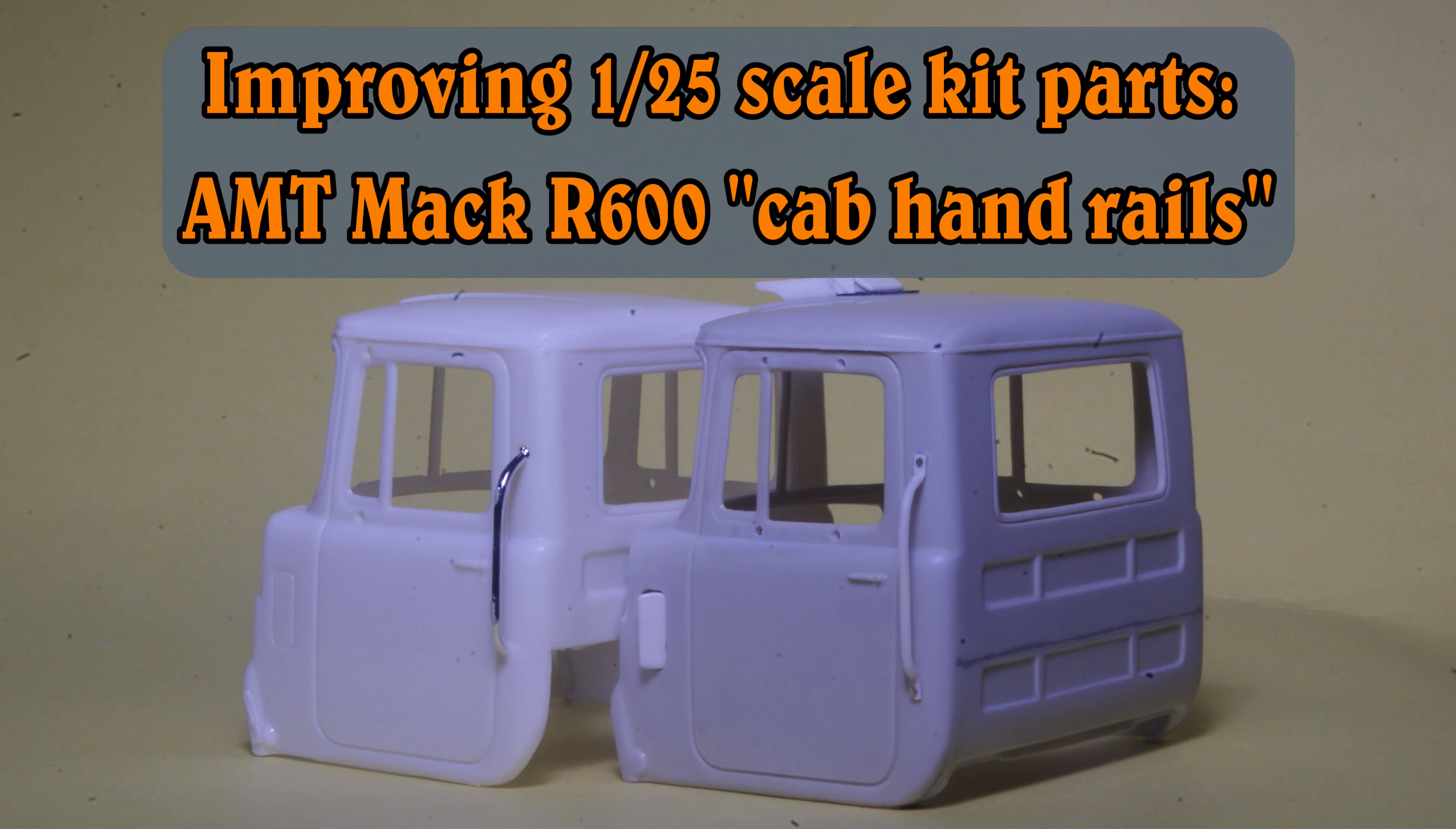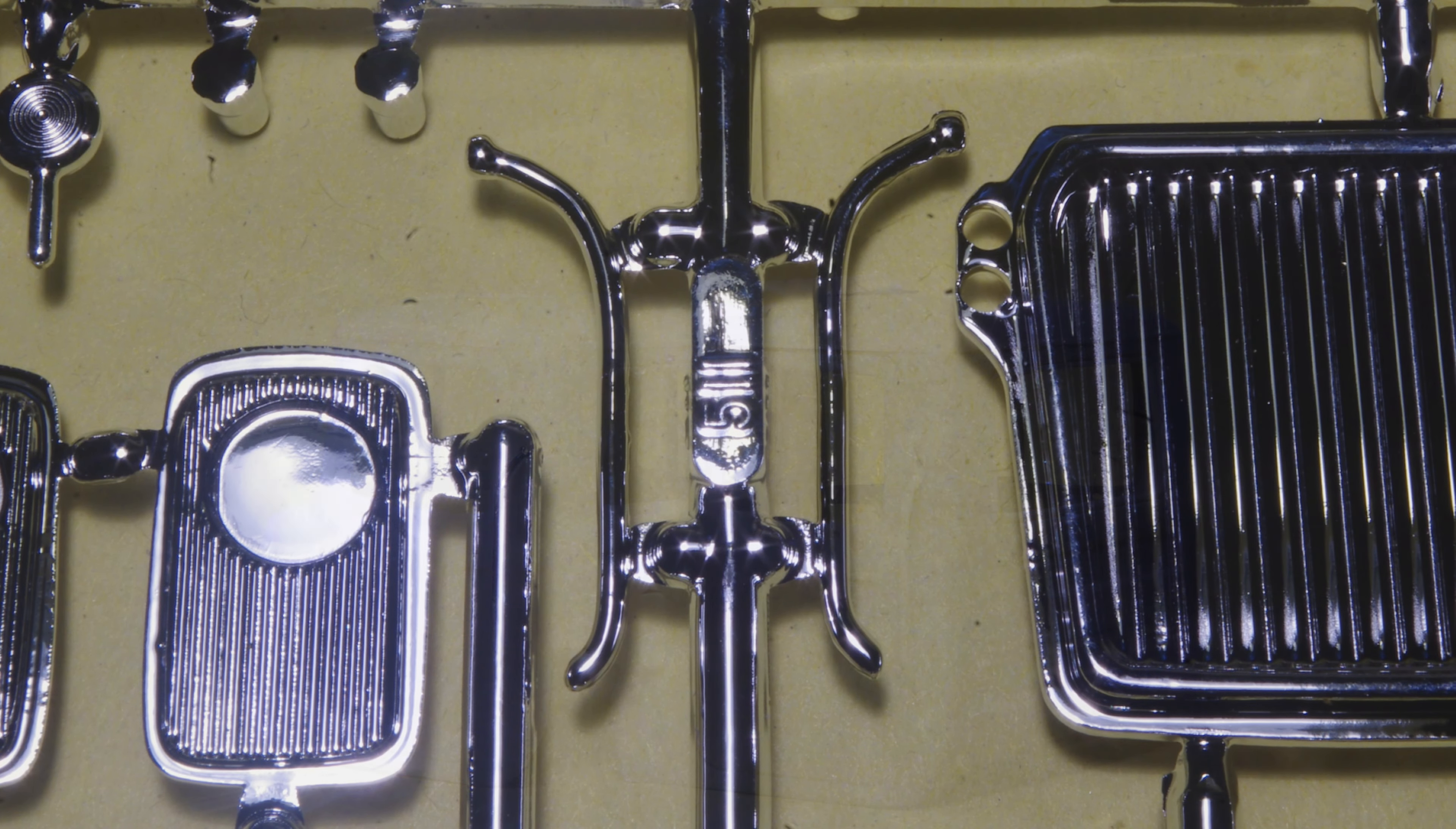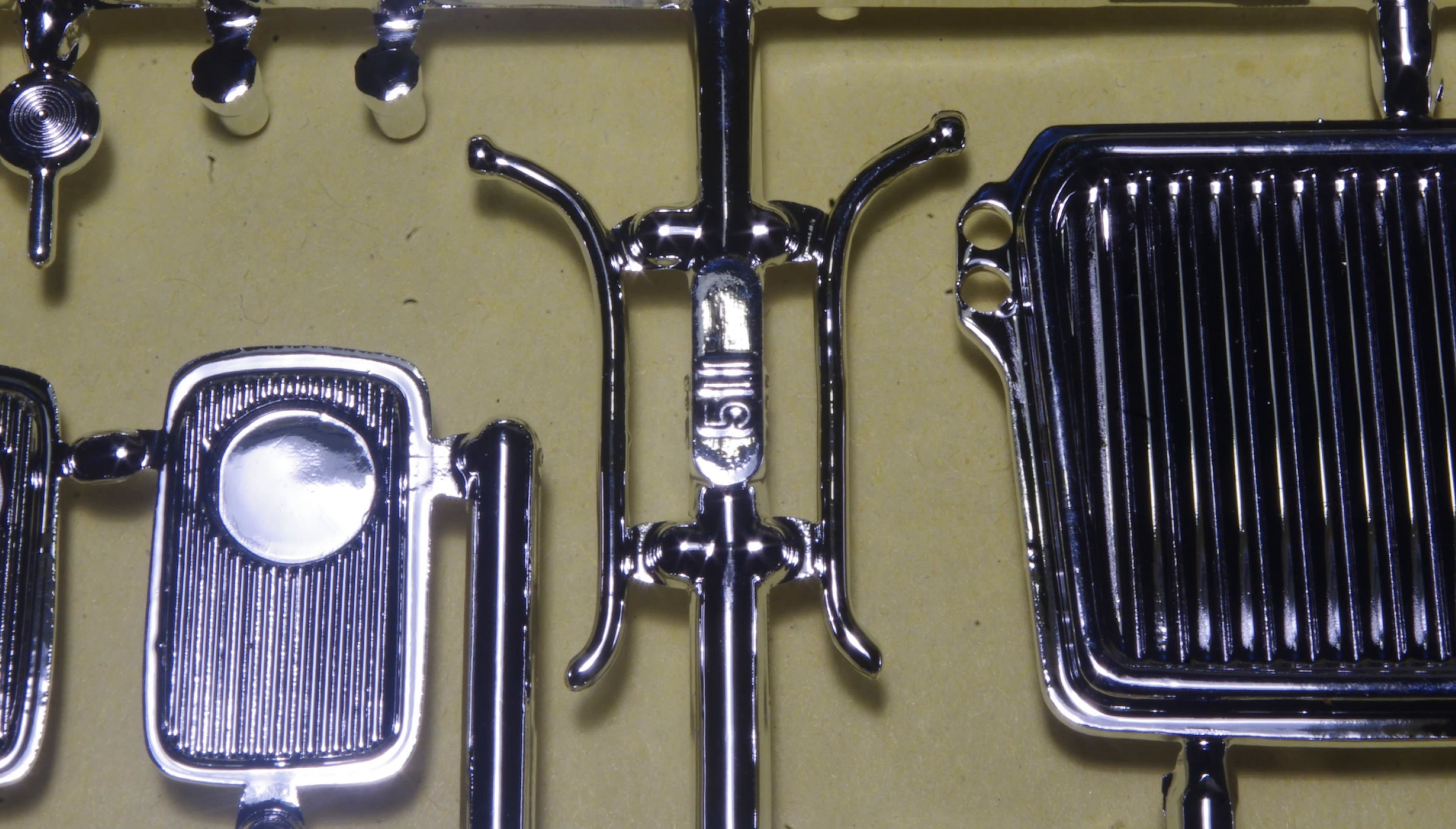The cab handrails in AMT's MACR600 kit are a good example of the stock kit part having the correct size and shape, but being rather inaccurate in the way it attaches to the cab.